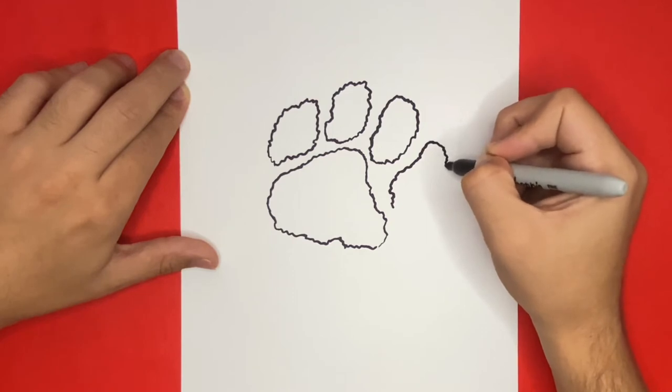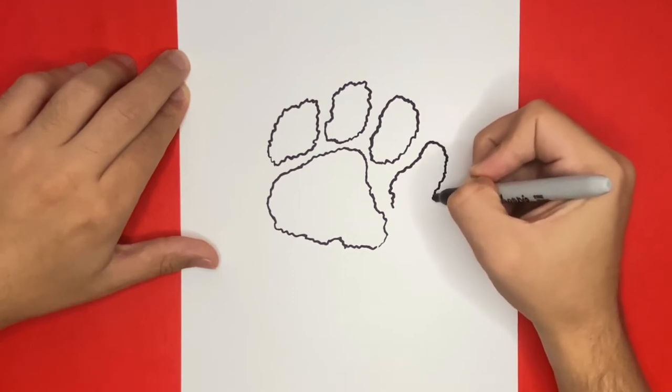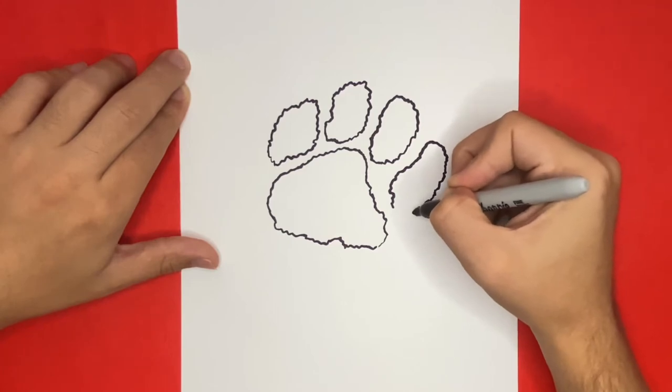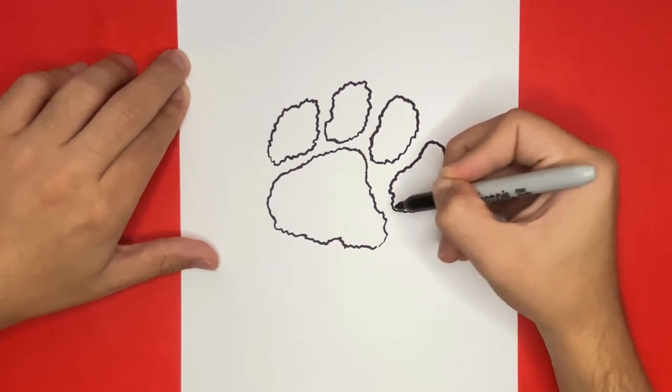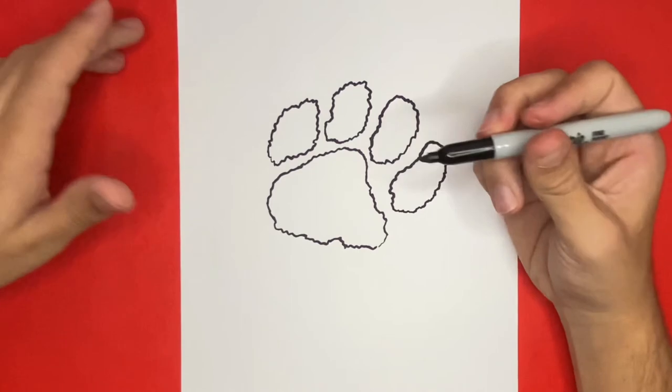Thanks for watching learn how to draw hub and great job on your Clemson Tigers logo. Be sure to subscribe and hit the like button if you want to stay up to date on more videos just like this. Now stick around so that we can color our drawing together.